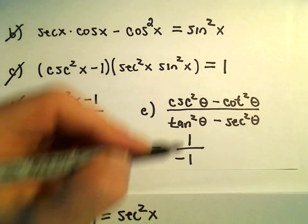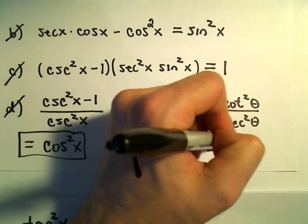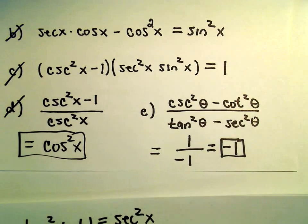So I really have 1 over negative 1, which is simply going to give us negative 1.